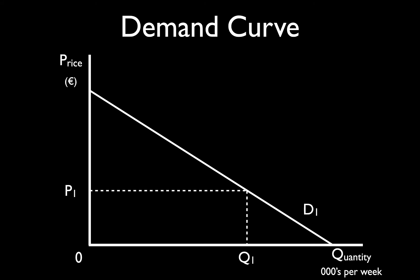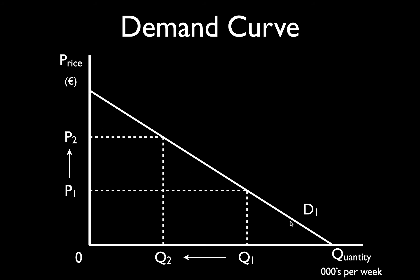Starting at a lower price P1 — say 5 euro — and then the price rises up to P2, which is 10 euro. We go out to the demand curve, touch it, and go down to get quantity Q2. Q2 is less than Q1 — it is to the left of Q1 — meaning fewer units are purchased at the higher price. Whether the price rises or falls, the demand curve is always downward sloping, which gives us the law of demand.